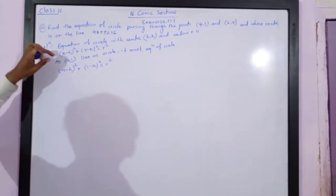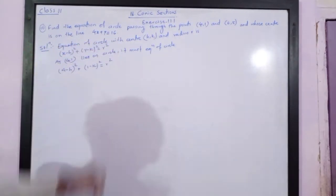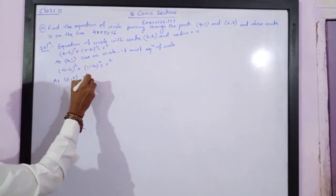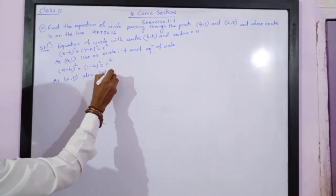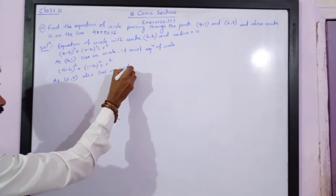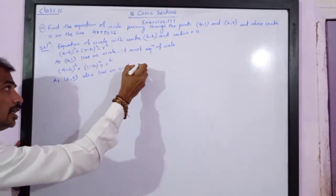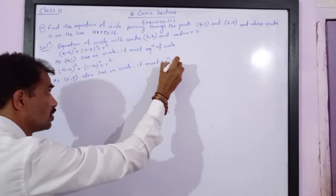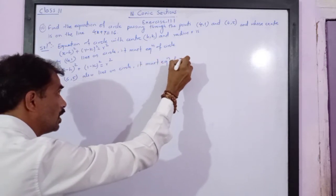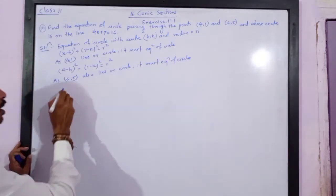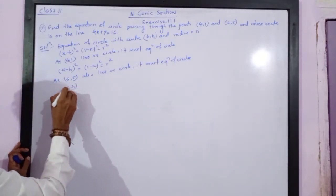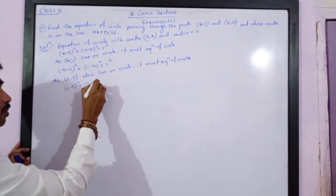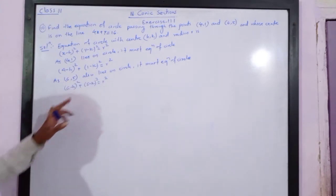Similarly, point (6, 5) also lies on the circle, so it must also satisfy the equation of the circle. Substituting x = 6 and y = 5, we get: (6 − h)² + (5 − k)² = r². This is equation number 2.